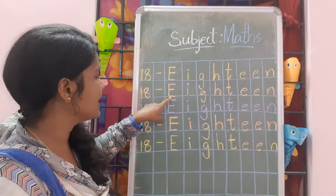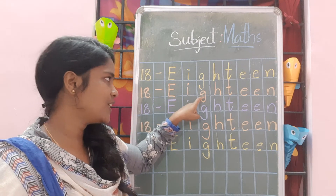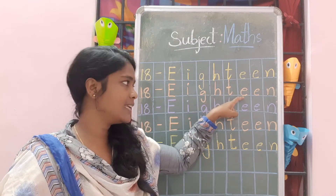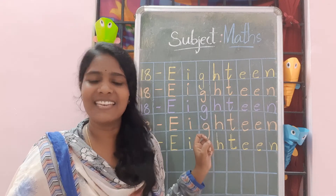Again, read again: E, I, G, H, T, E, E, N. 18.